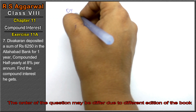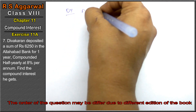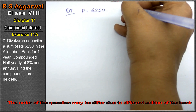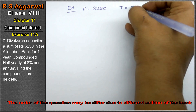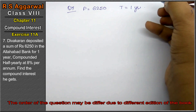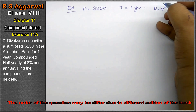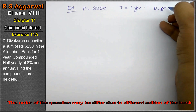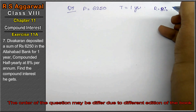Let's do question number 7 of exercise 11A, that is compound interest. Question number 7: Divakran deposited a sum of rupees 6,250 in a bank for 1 year, compounded half-yearly at 8% per annum. Rate is 8% per annum. Find the compound interest he gets.